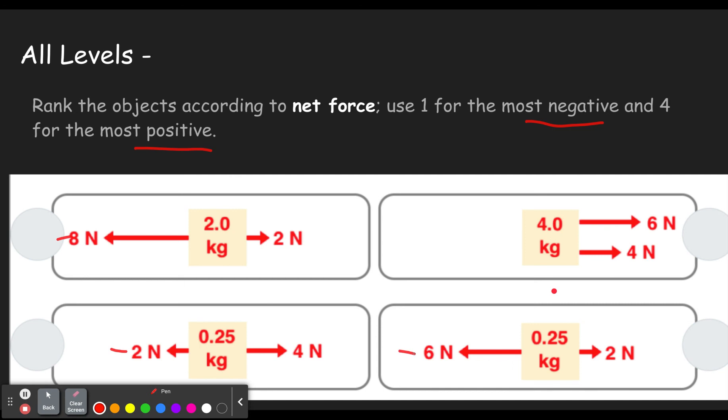So when we combine negative eight and two, we get a total force. We can do net of negative six newtons. Here we have negative two and four. So the net force is two newtons.